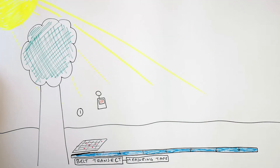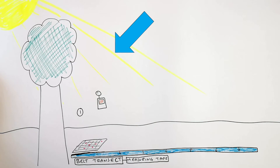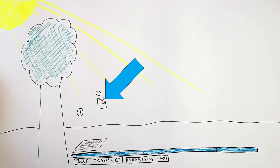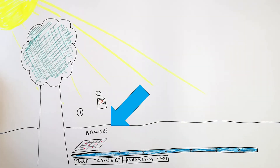You now measure your abiotic factor, in this case light intensity. We've got a light intensity of 10, and we count the number of flowers inside the quadrat at this point. In this case there are 8 flowers.